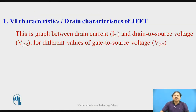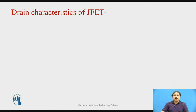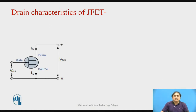Before going to the circuit arrangement, the VI characteristics is a graph between the drain current and the voltage from drain to source. We take this current versus voltage variation for different conditions of the voltage between gate to source — different values of gate-to-source voltage. One more set of characteristics is the transfer characteristics, which is a graph between the output current ID and the voltage from gate to source, keeping the drain-to-source voltage constant. Today in this video we are going to focus more on the drain characteristics.